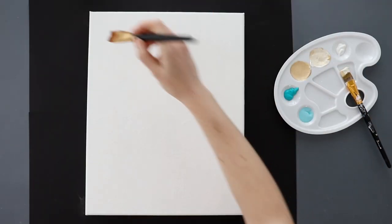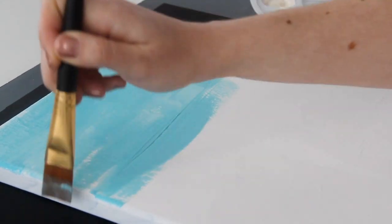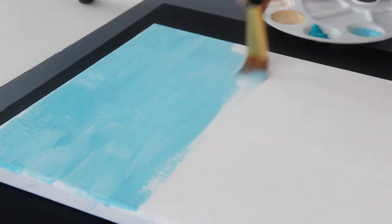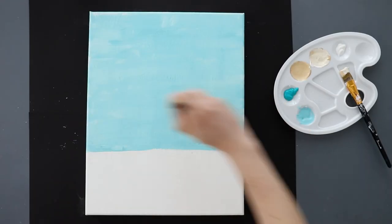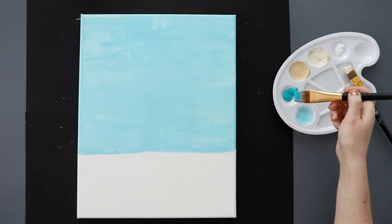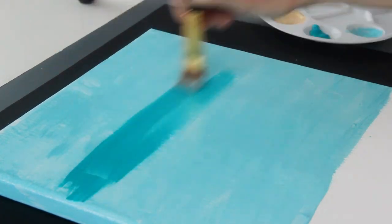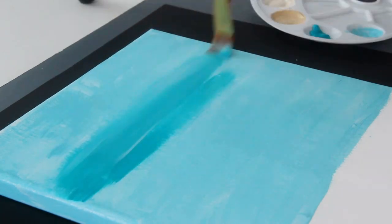Now use a 1-inch paintbrush to add your light blue color to the top two-thirds of the canvas. Use long horizontal strokes to cover it. And make sure to also paint the edges of the canvas. Now using the same brush and while it's still wet, grab a bit of teal and blend that into the blue by using more long horizontal strokes.